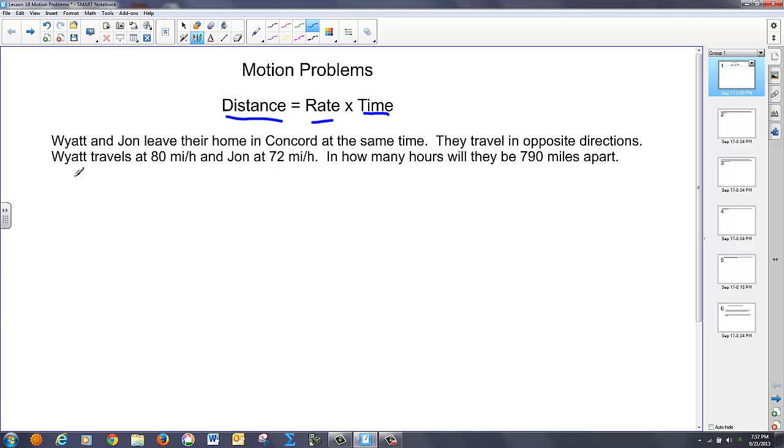So if we look at our first problem, it says you've got Wyatt and John, they leave their home in Concord at the same time. They travel in opposite directions. Wyatt's going 80 miles an hour, and John's going 72 miles an hour. And you want to know in how many hours will they be 790 miles apart. So if I draw a picture of this, we've got a central location that they're leaving from. They're traveling in opposite directions, and we want to know how long is it going to take before there's 790 miles between them.